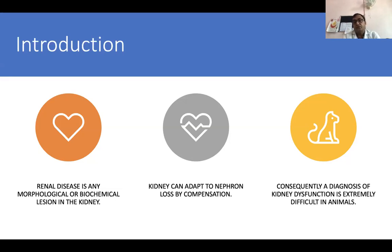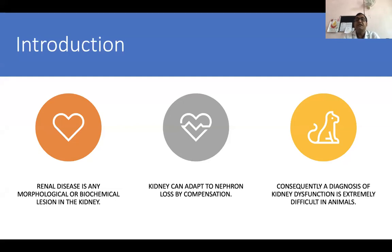Consequently, for diagnosis, the animal will not say it is suffering from polyuria and polydipsia. The owner, pet owners, or even cattle owners have to judge whether the animal is suffering from any type of kidney-related disease, because it shows very classical and different signs. A diagnosis of kidney dysfunction is extremely difficult in animals. You have to depend upon different secondary lesions and secondary symptoms that come for diagnosis.